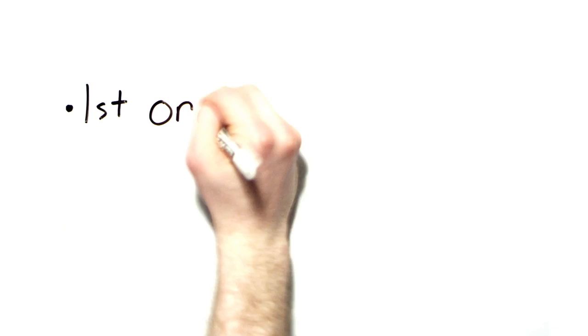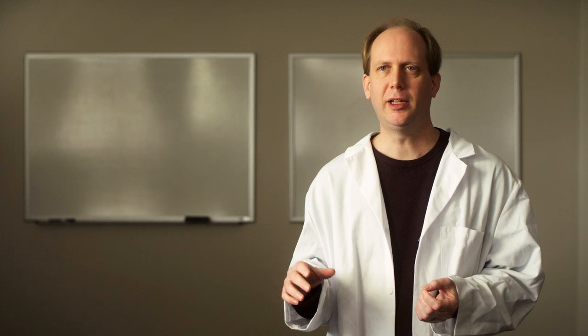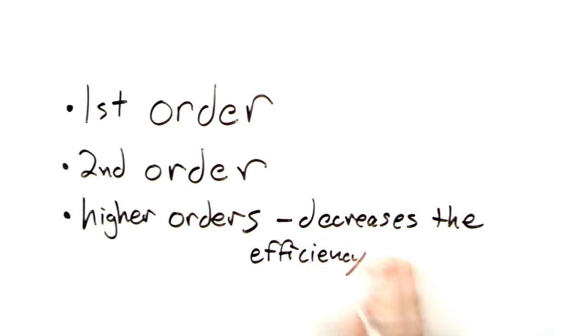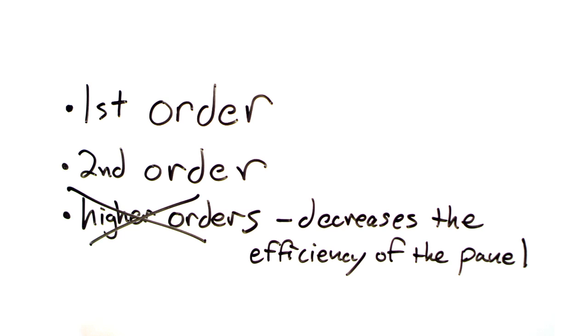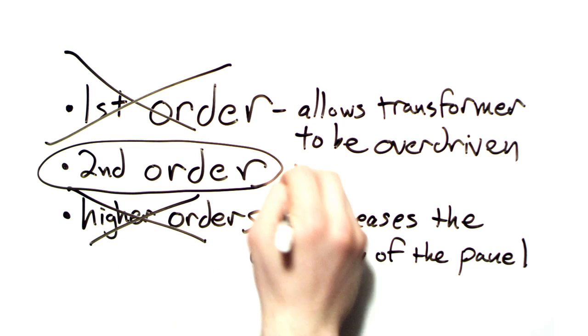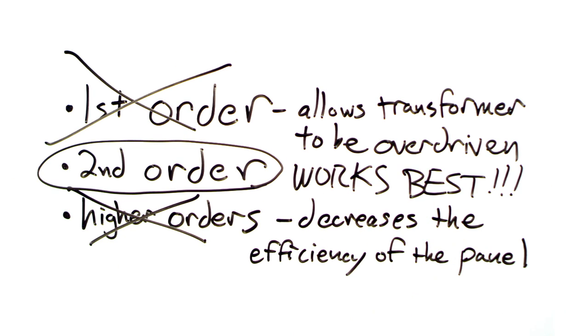Typically on Electrostat, we'll use a second-order high pass. Higher orders present too many issues when driving a capacitive load because it requires extra capacitors in series with it, and that will actually decrease the efficiency of the panel. And first-orders will tend to allow the transformer to be overdriven, so we stay away from those. We've found over the years second-order high passes work just best with the electrostatic elements. It's an overall good balance for us.